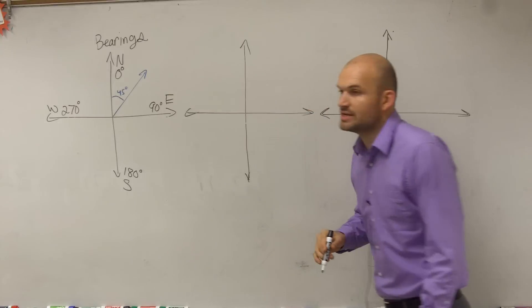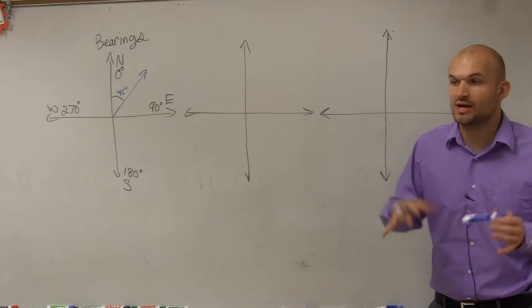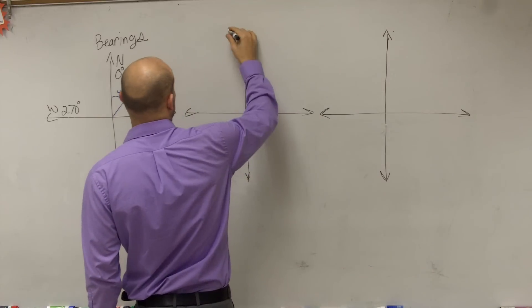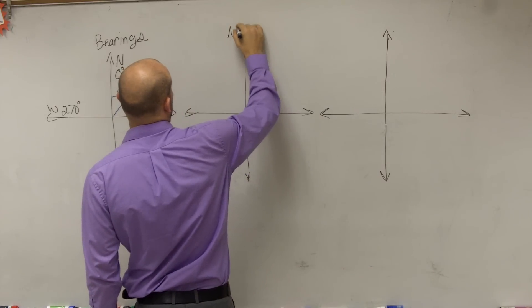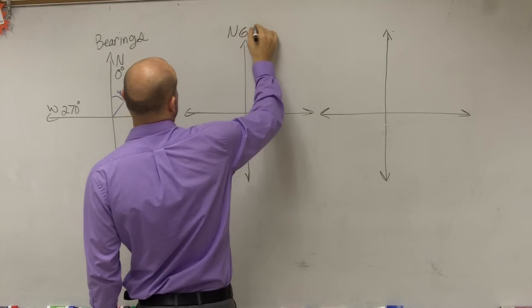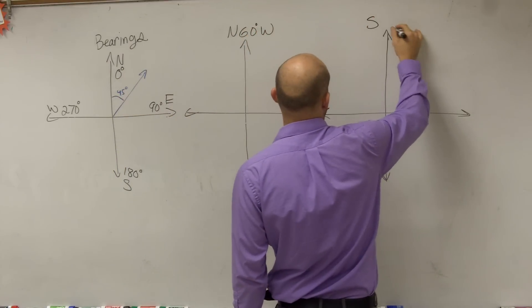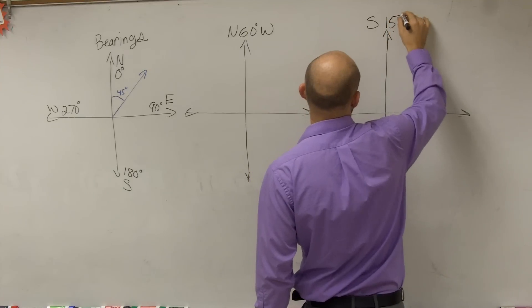Next thing. There's now a different way we can describe bearings. Rather than just kind of giving you an angle, we could also sometimes say this. We could say north 60 degrees west, or we could say south 15 degrees east.